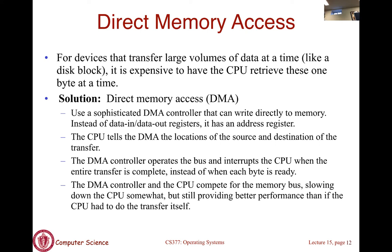The DMA acts like a proxy for the CPU. The CPU is no longer in the IO path once the command has been issued. Data is either written directly from RAM to the device, or read from the device into RAM, while the CPU executes other things. The DMA controller and CPU will compete on the system bus for memory access, but the system bus arbitrates this concurrent access, and this is still more efficient than having the CPU involved in every byte of IO.